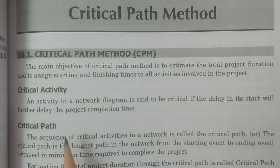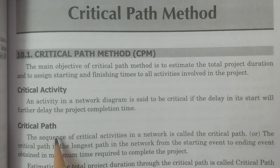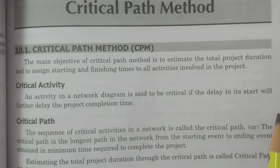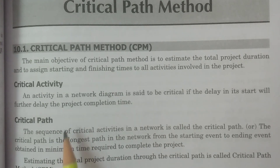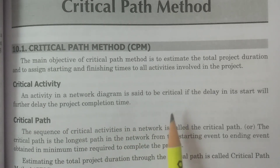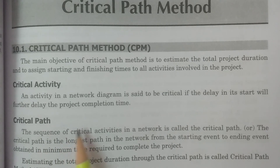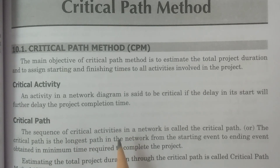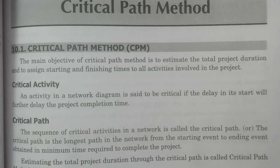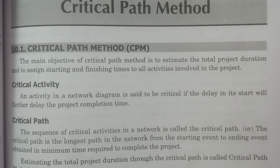For CPM, you have to define two particular things: critical activity and critical path. What is meant by critical activity? An activity in a network diagram is said to be critical if a delay in its start will further delay the project completion time. If delaying one activity leads to a delay in the total project completion time, then that activity is called a critical activity.